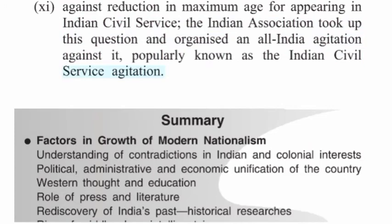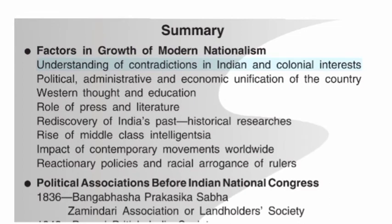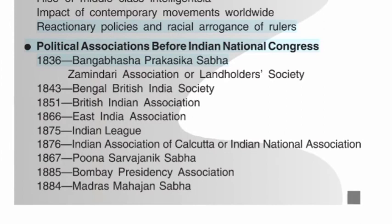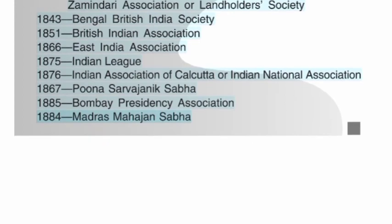Summary: Factors in the growth of modern nationalism include — understanding of contradictions in Indian and colonial interests; political, administrative and economic unification of the country; western thought and education; role of press and literature; rediscovery of India's past through historical researches; rise of middle class intelligentsia; impact of contemporary movements worldwide; and reactionary policies and racial arrogance of rulers. Political associations before the Indian National Congress: Bangabashi Prakashika Sabha (1836), Landholders' Society, Bengal British India Society (1843), British Indian Association (1851), East India Association (1866), Indian League (1875), Indian Association of Calcutta/Indian National Association (1876), Poona Sarvajanik Sabha (1867), Bombay Presidency Association (1885), Madras Mahajan Sabha (1884).